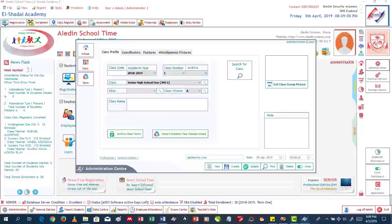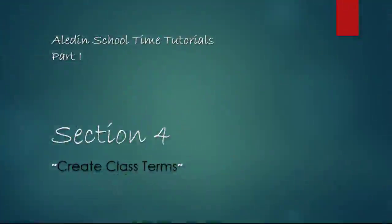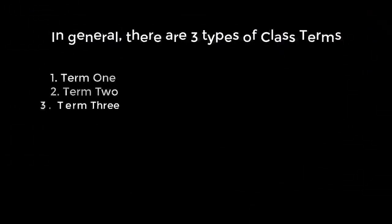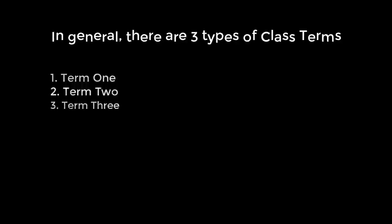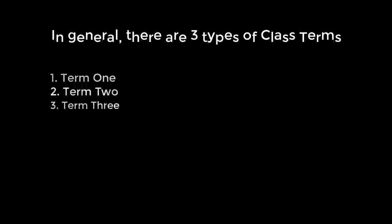Now let's see how we will create the terms — A, B, and C — for each class we have created in the next section. Section 4: How to create class terms. A class term is defined as a definite period within a class. In general, we have three terms in a class. Aladdin School Time allows you to create as many terms as there are within a class for the academic year. This is a unique feature which makes it possible to do student assessments for mock exams and the like, all within a defined term.